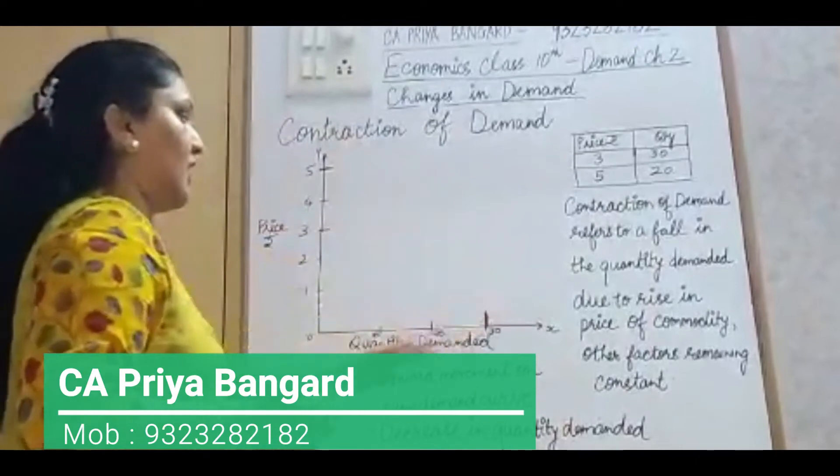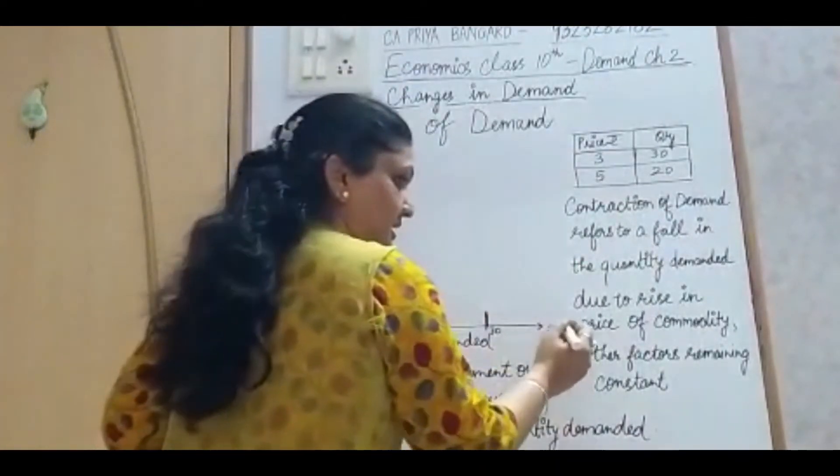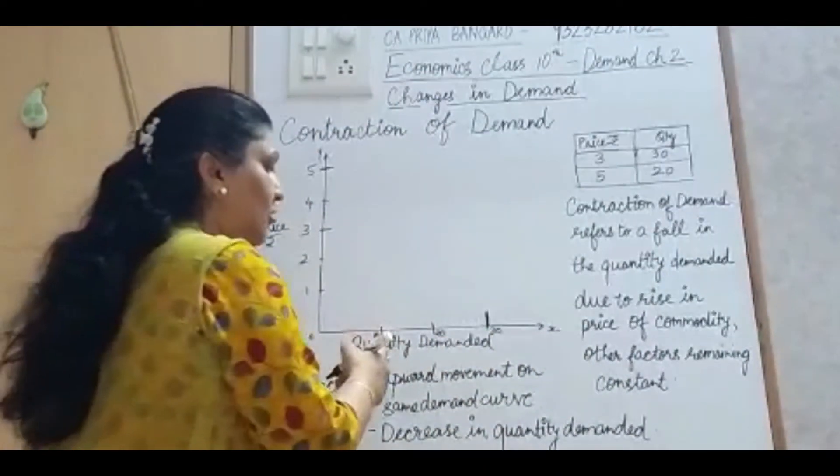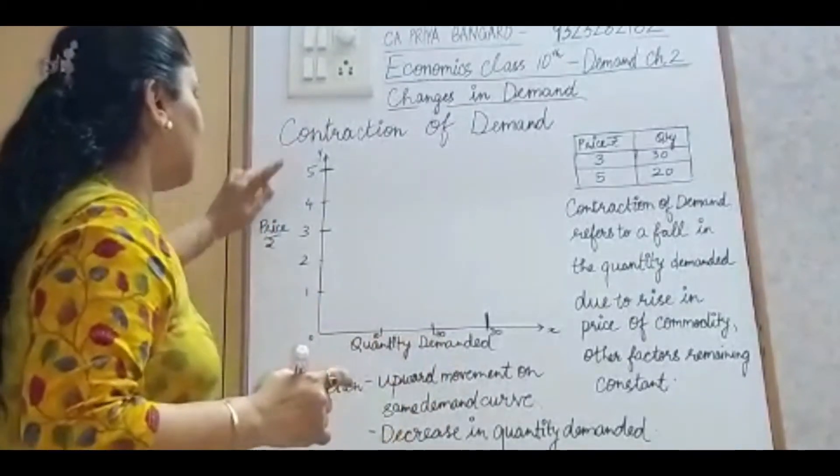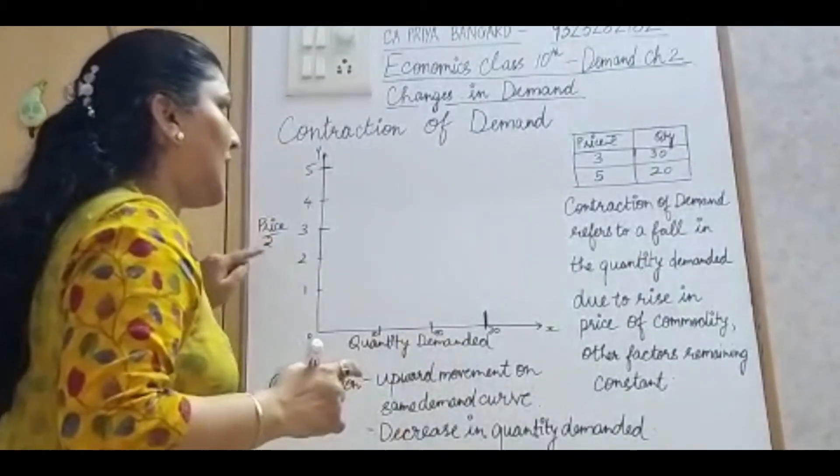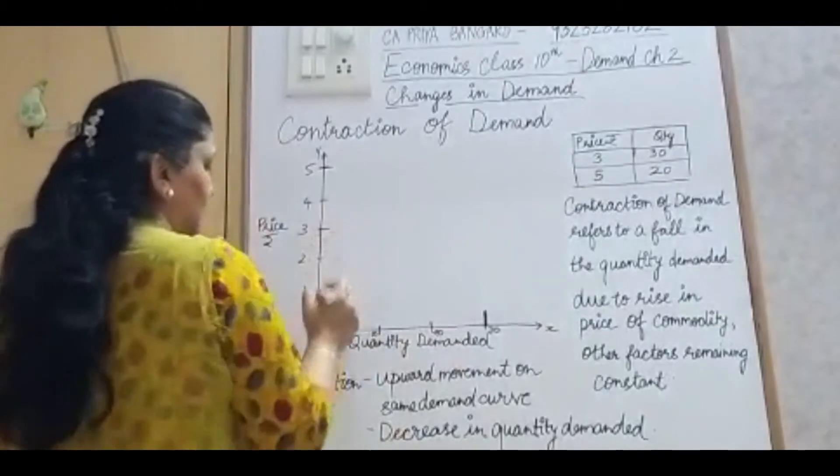So let's put it on the graph. On x-axis, there will be always quantity demanded. On y-axis, there will always be price.